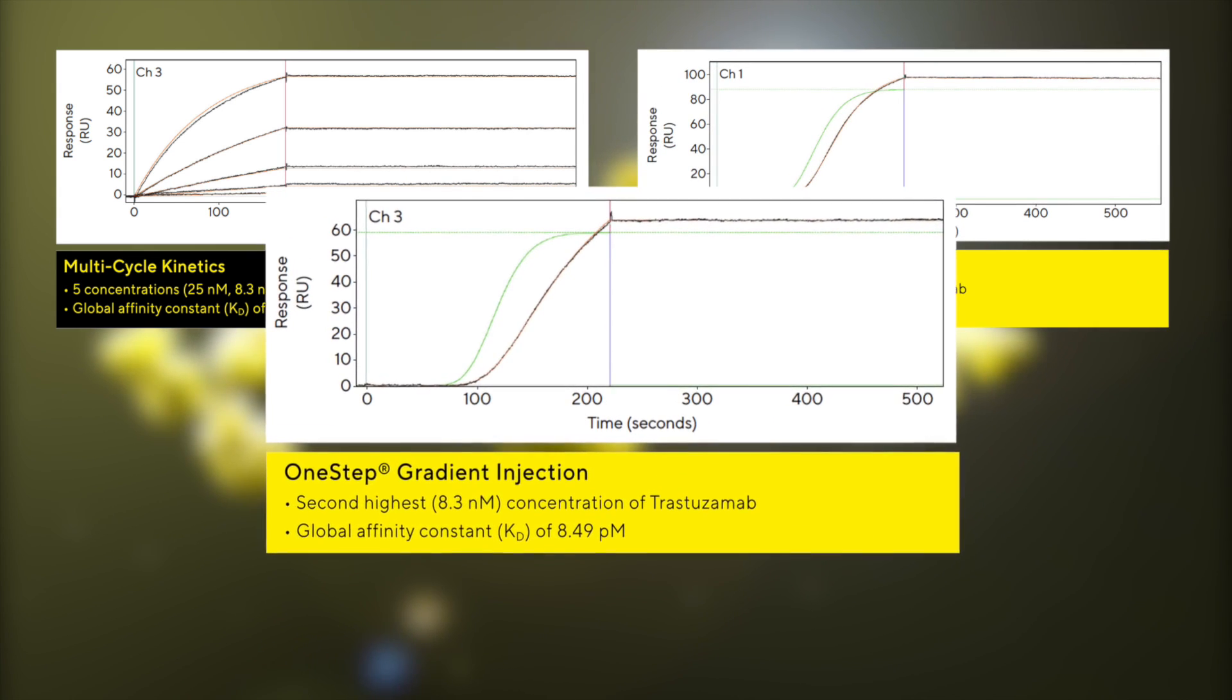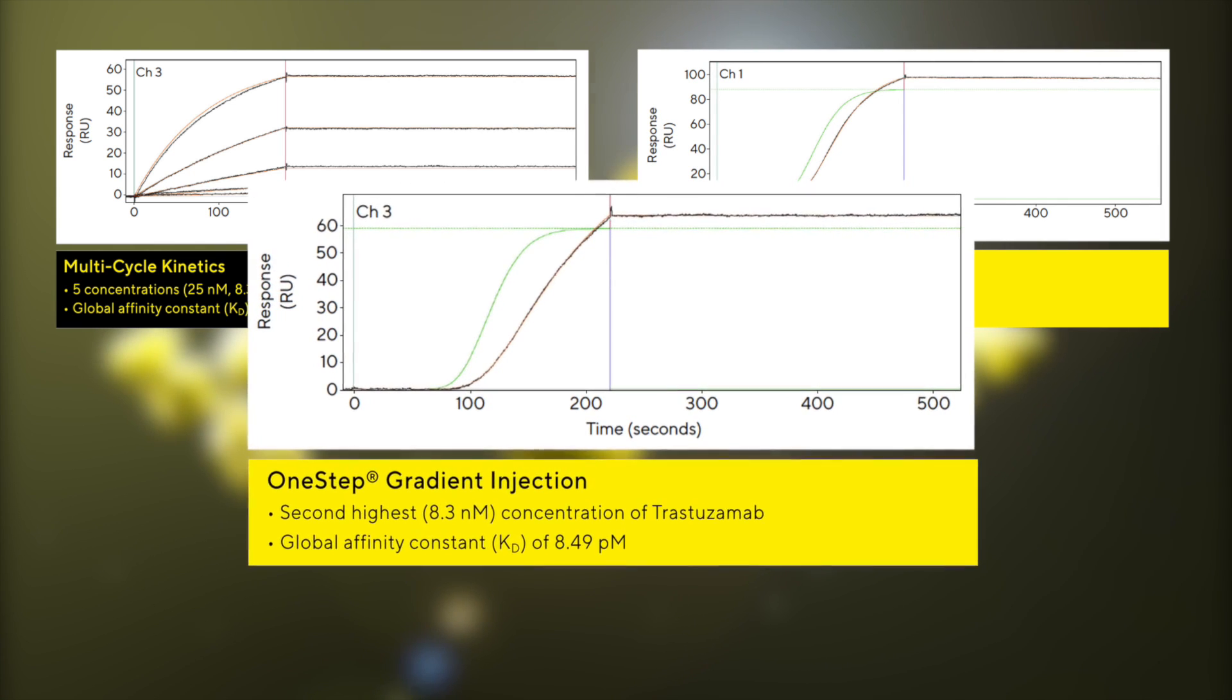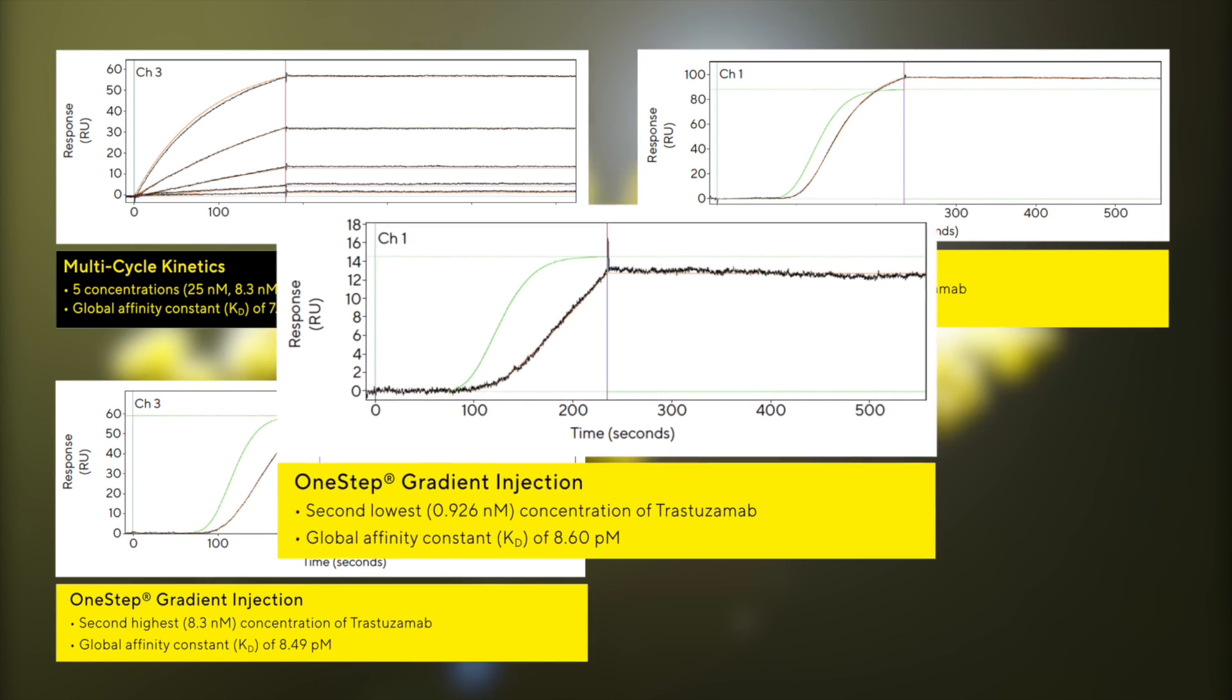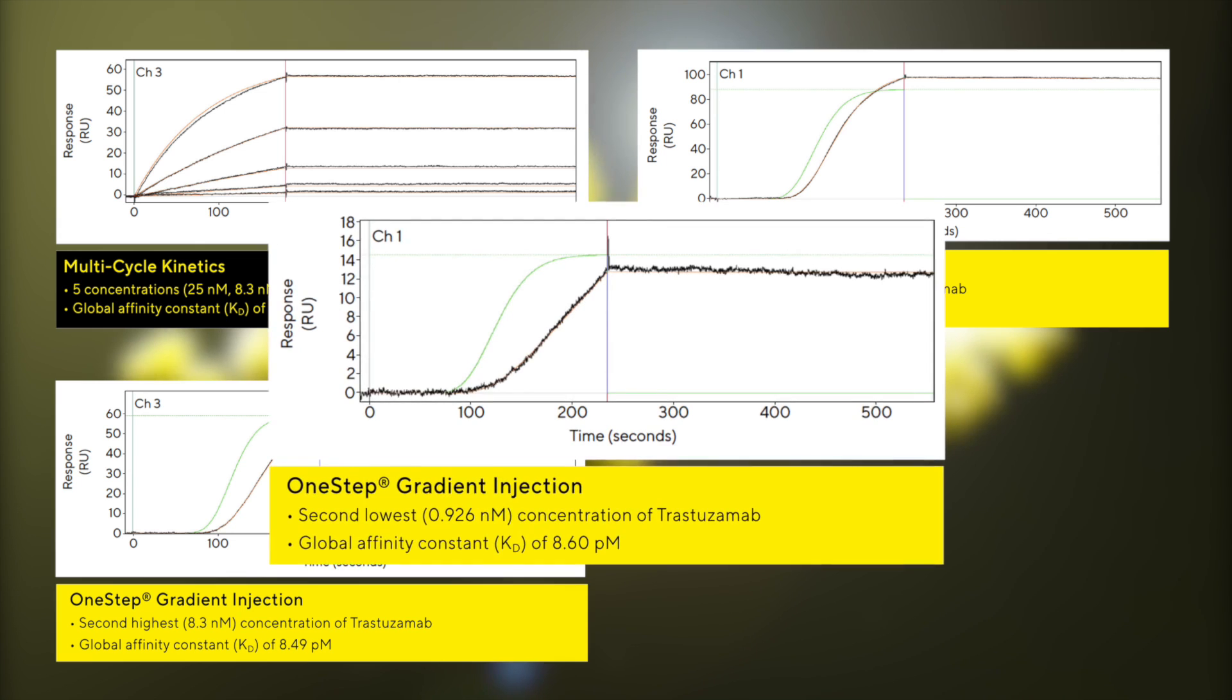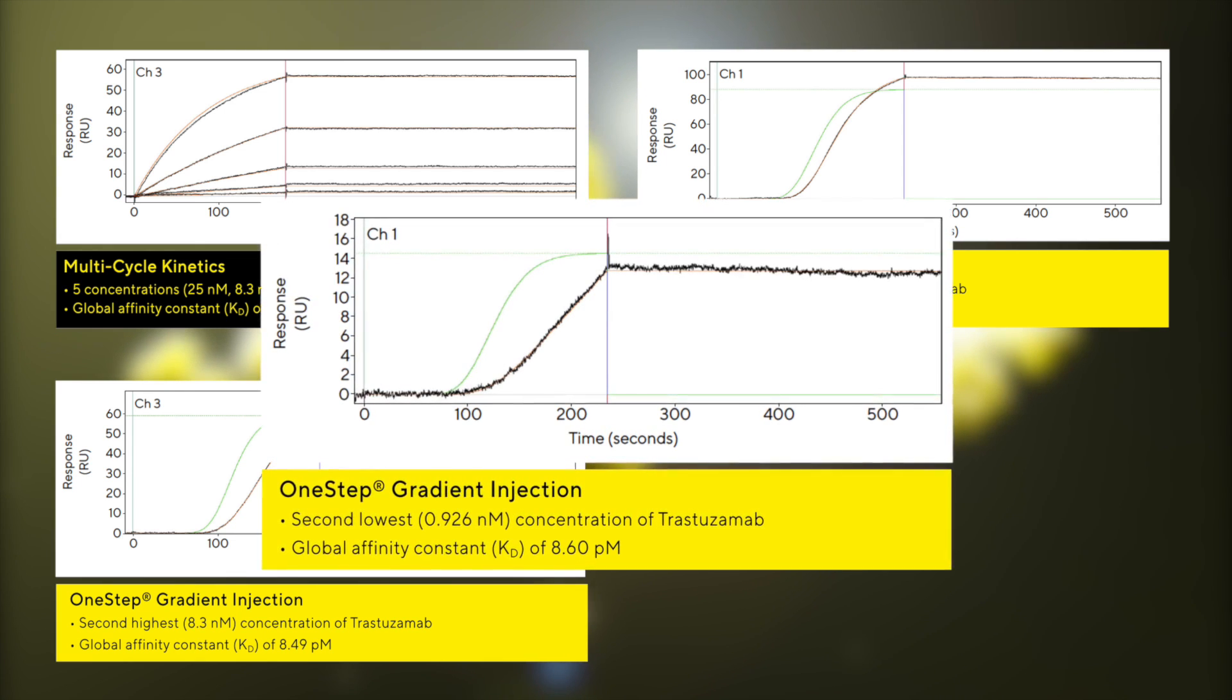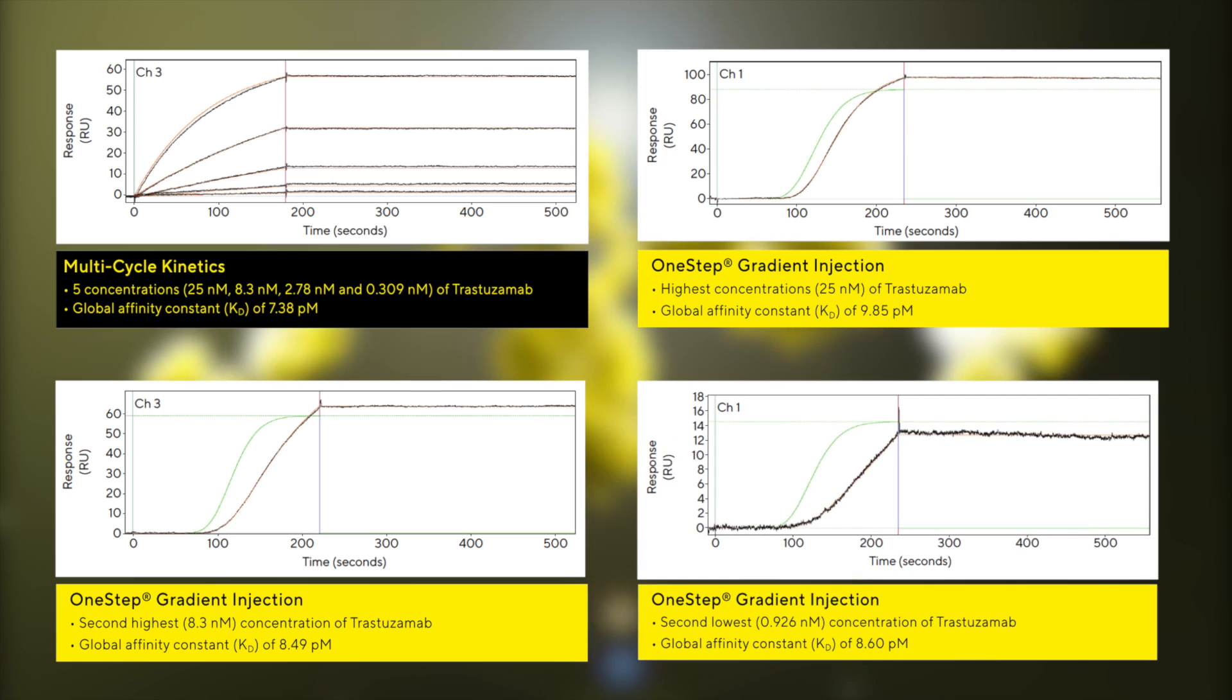This means that analysis of a 96-well sample plate really does generate comprehensive data for 96 different samples. Imagine screening 768 unique compounds in a single unattended run, with no differences in results compared to multi-cycle kinetics, irrespective of the analyte concentration used.